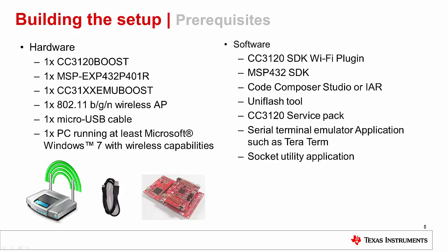Before we proceed, the following hardware should be acquired: a CC3120 booster pack, an MSP432 launchpad, a CC31XX emulator board, and an 802.11 B, G, or N wireless access point. An internet connection is not mandatory. We will also need one micro USB cable and a PC running at least Microsoft Windows 7 with wireless capabilities.